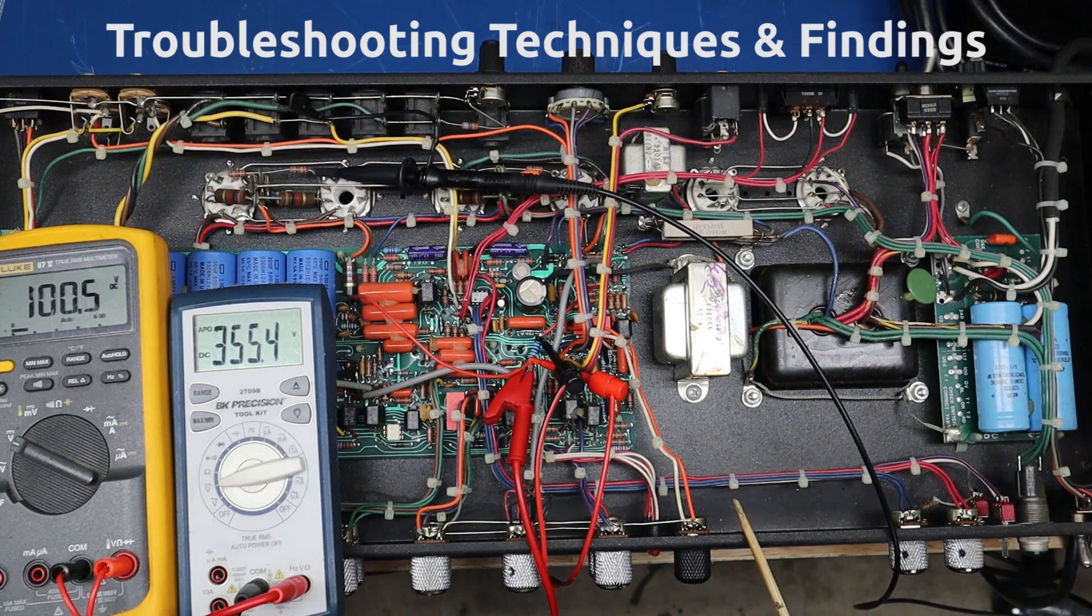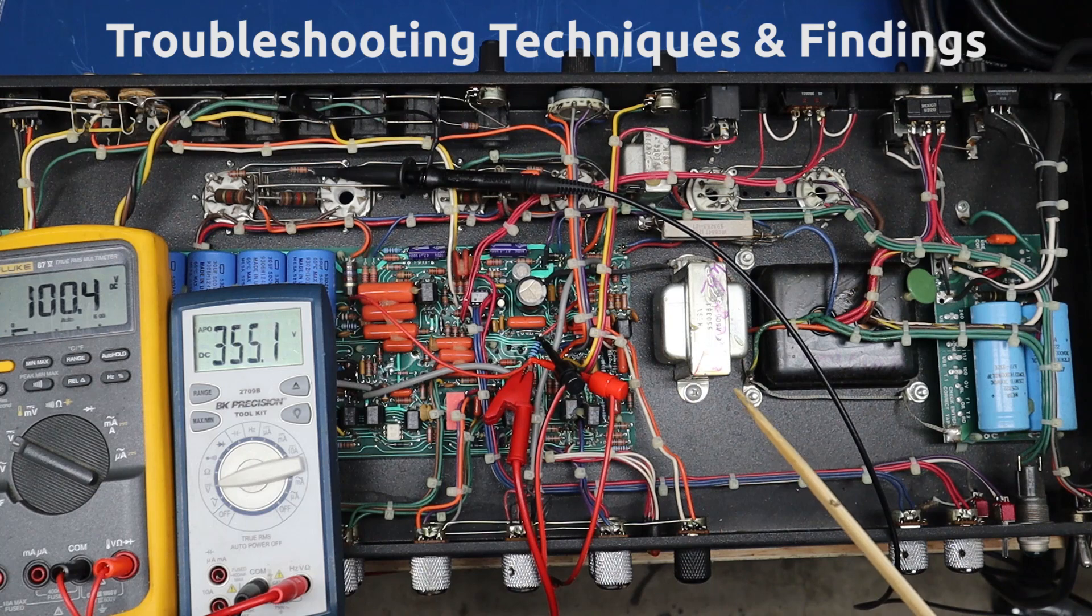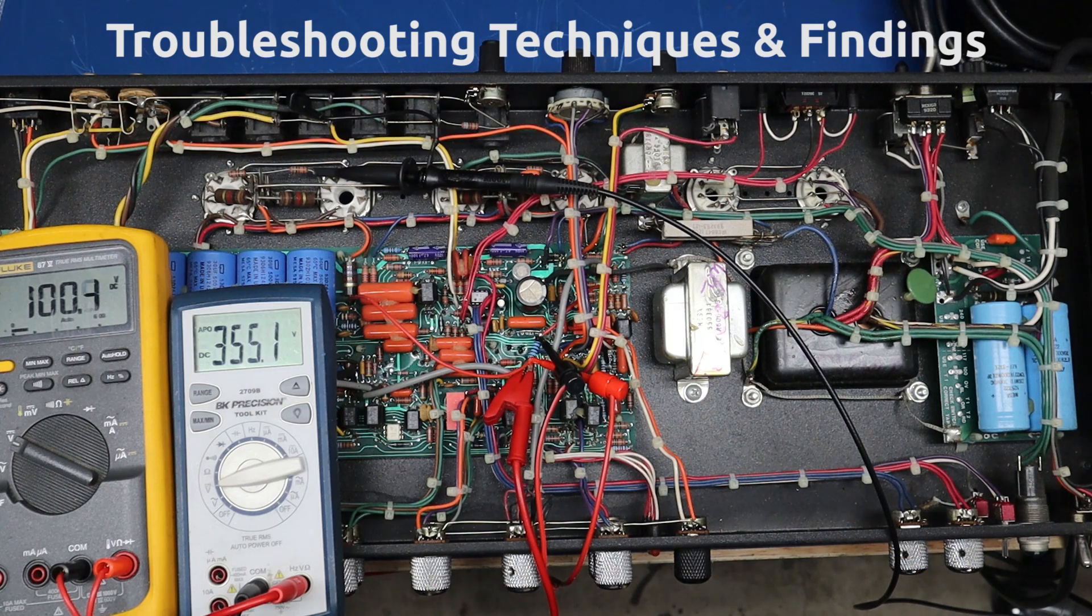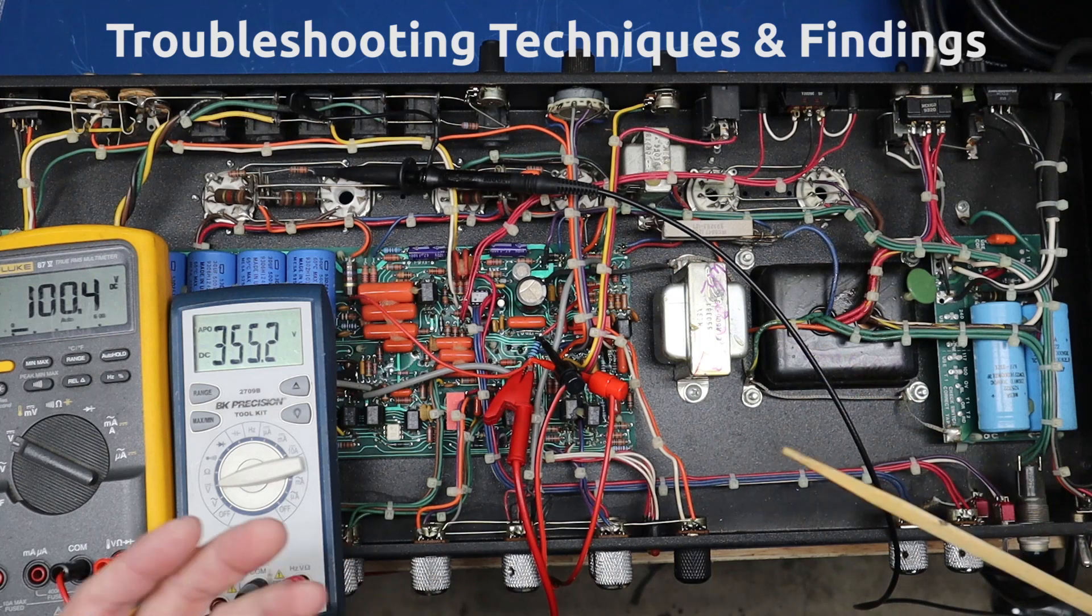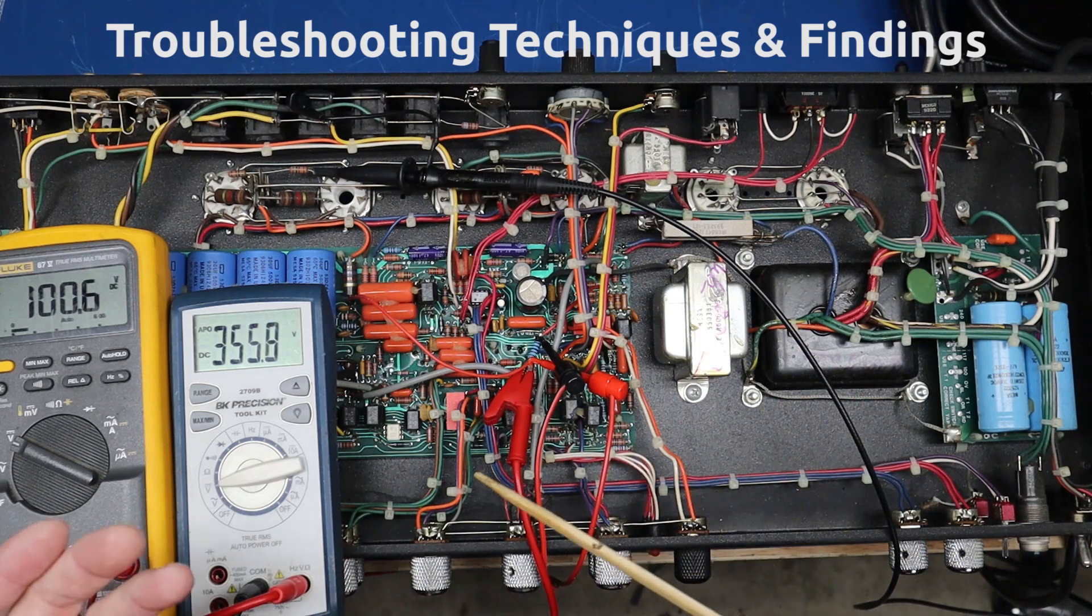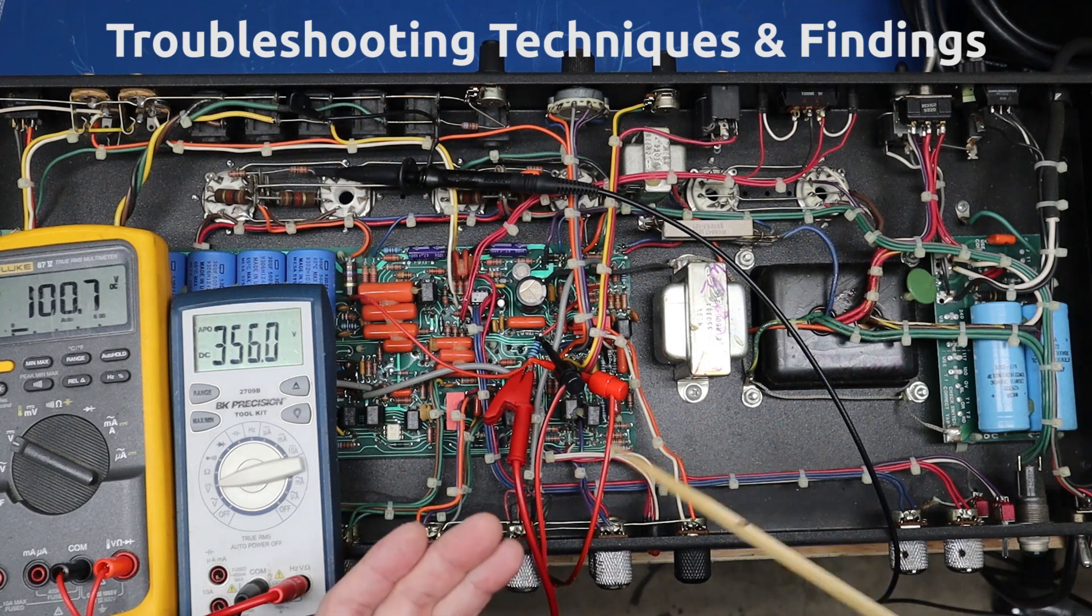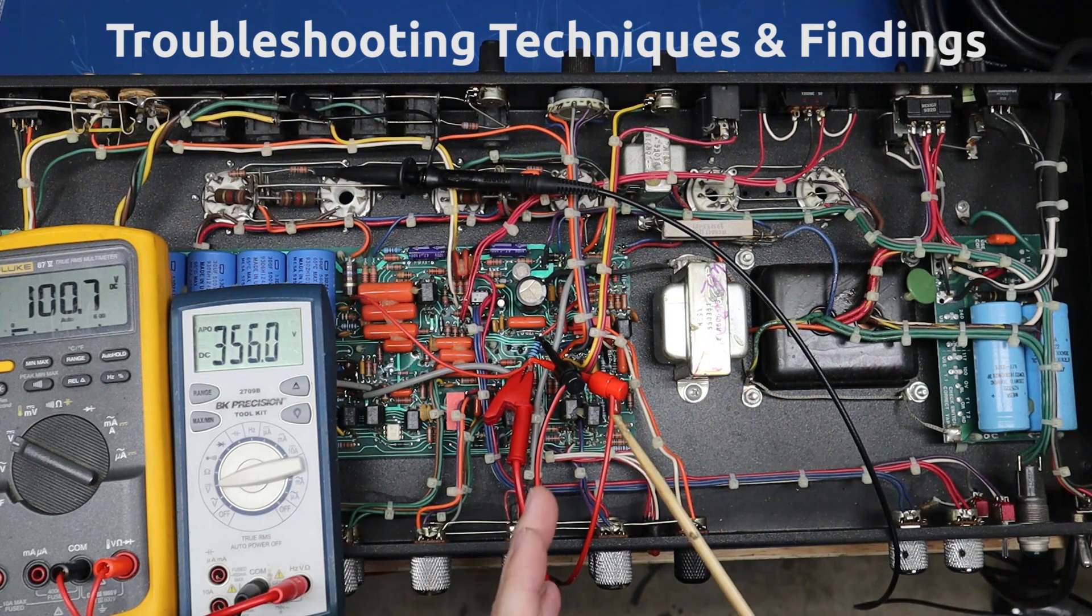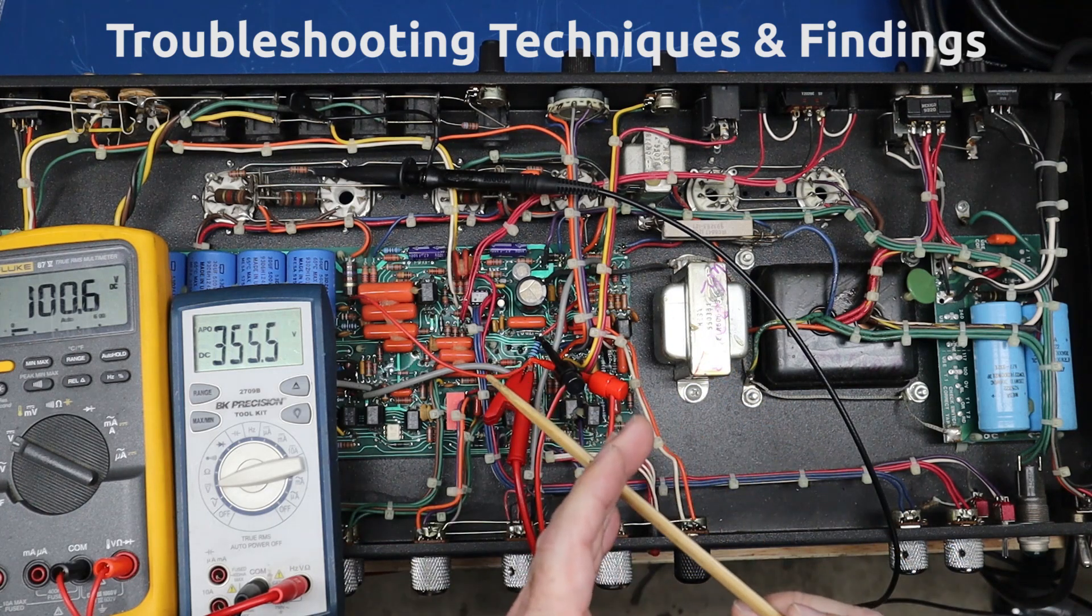So then because this is a two channel amp I looked at the scope and I switched the channels on the back and I got the same result irrespective of which channel this amp was on. So then I knew by looking at the schematic that it had to be somewhere in the preamp section but after the two channels joined back together.